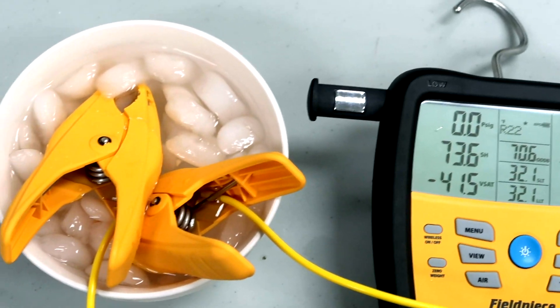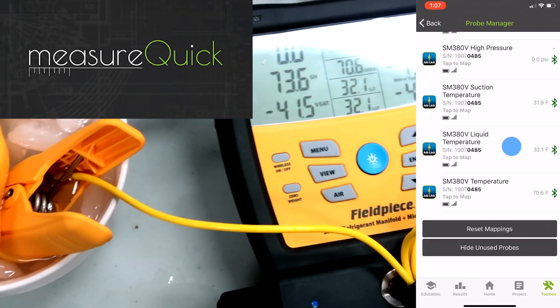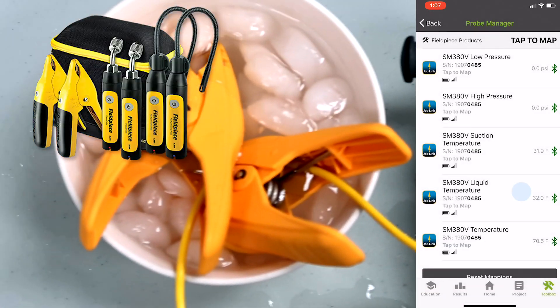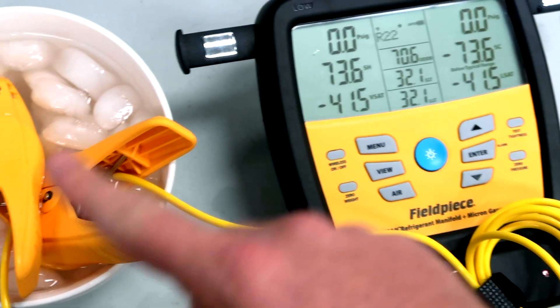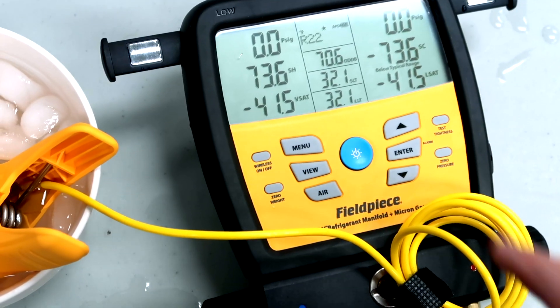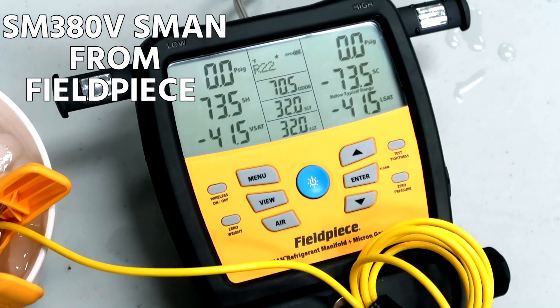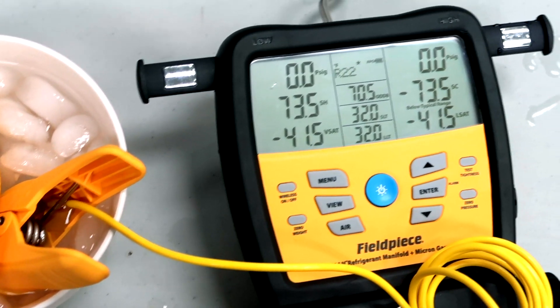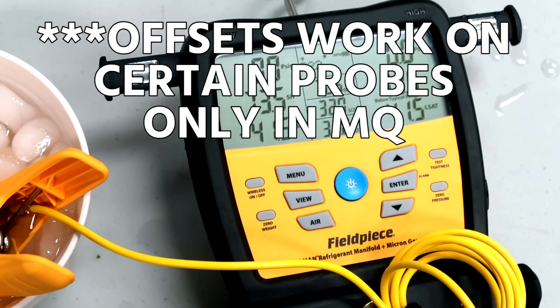If you're working with Measure Quick, this manifold also works with Measure Quick and functions with the Job Link probes. You can actually calibrate the Job Link temperature clamps in this same method. If they're connected they'll show up in that interface and you can calibrate those as well. This is the S-Man 380V, the newest manifold from Fieldpiece. Really like this manifold—it does work with Measure Quick.